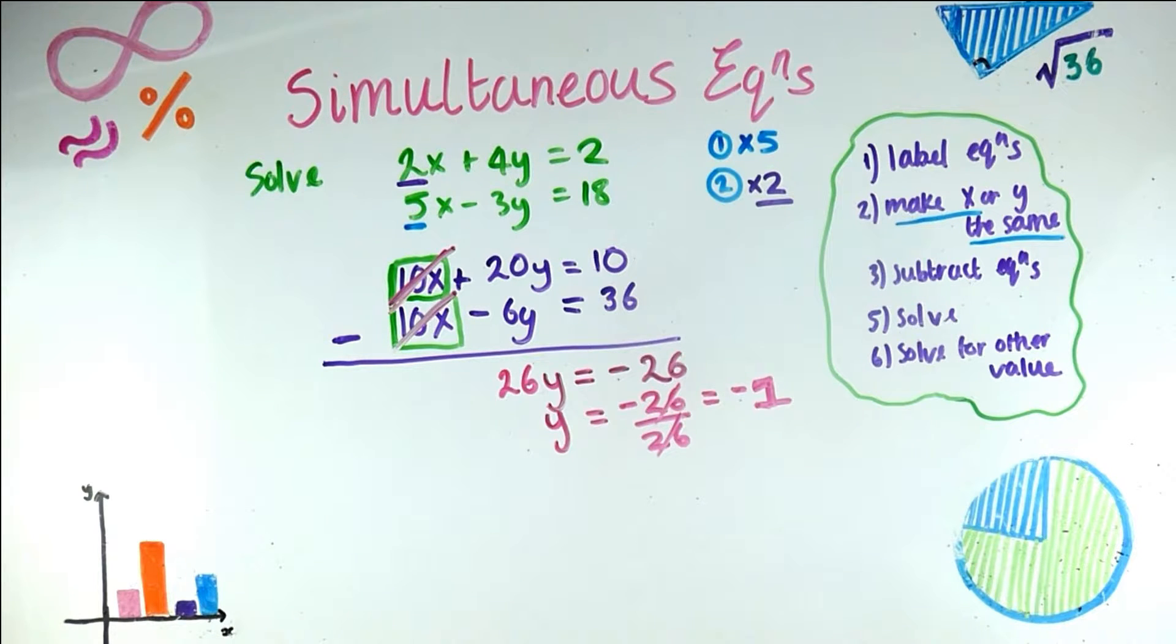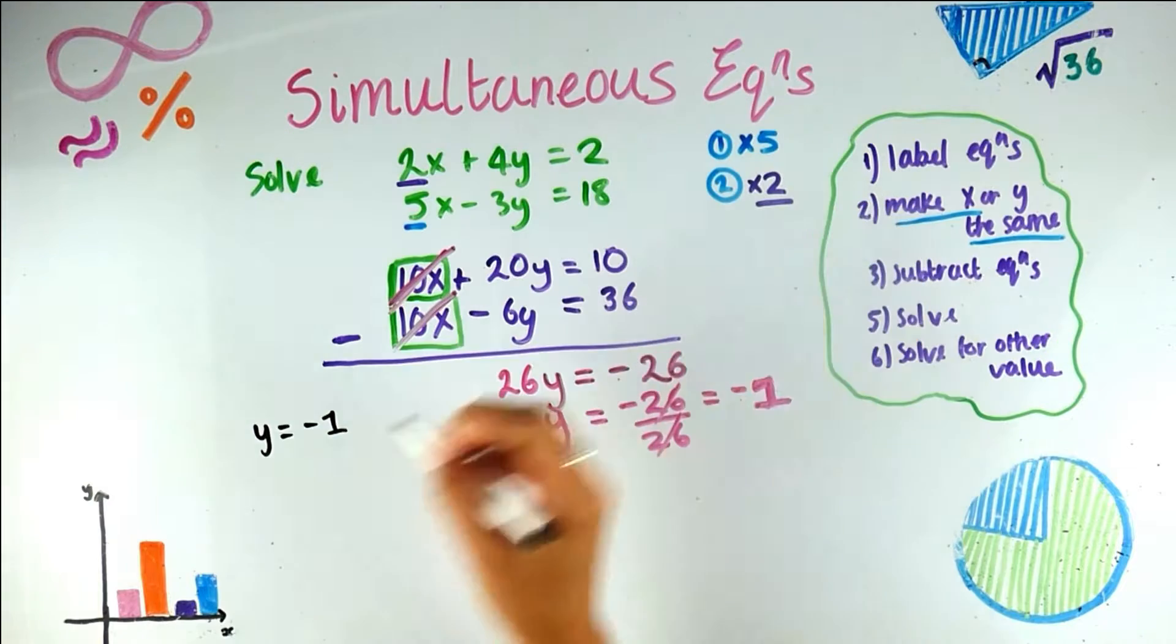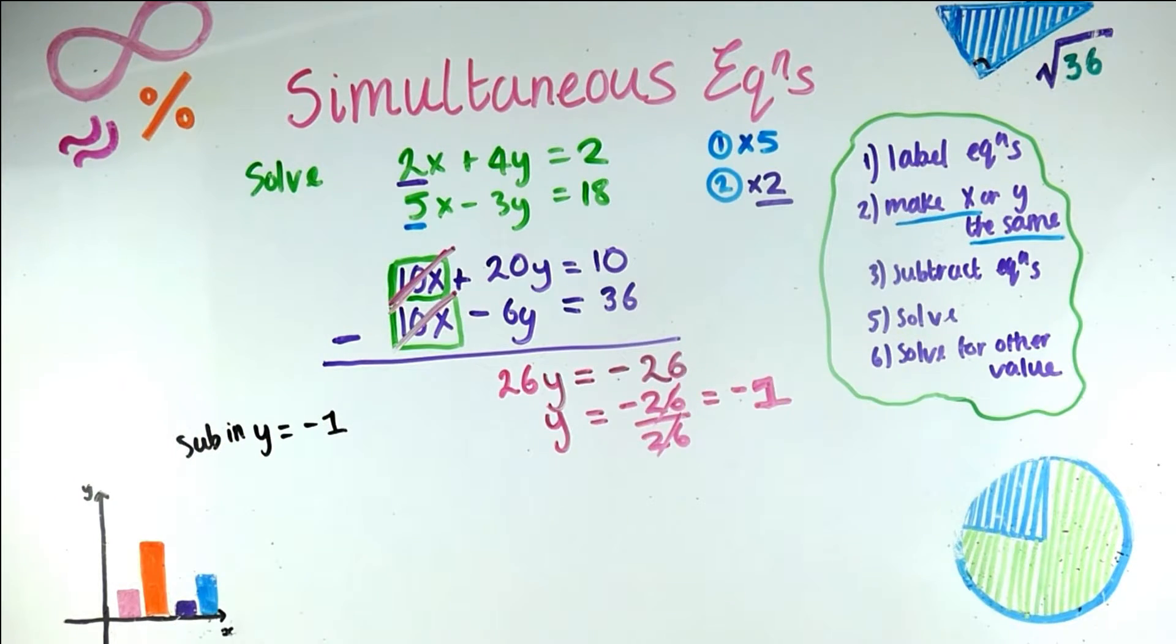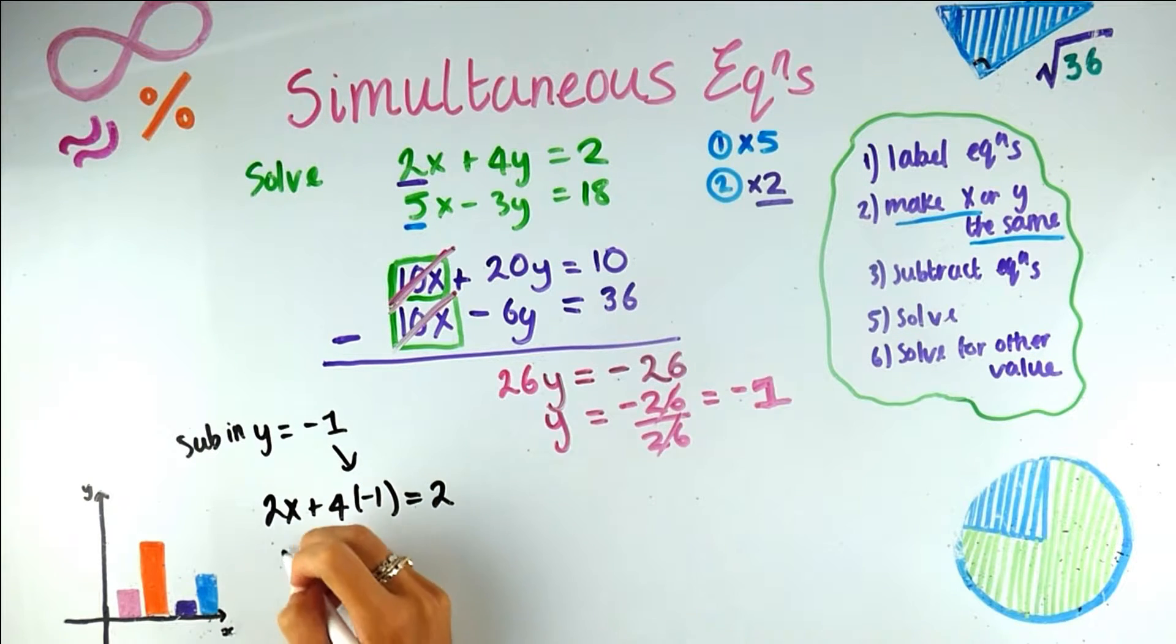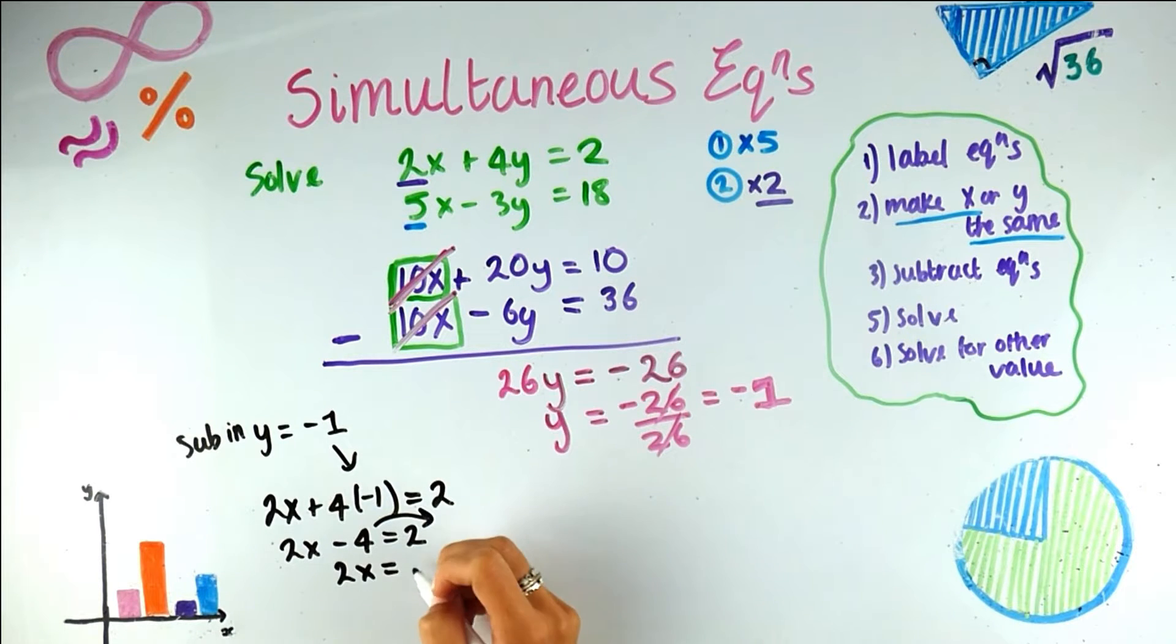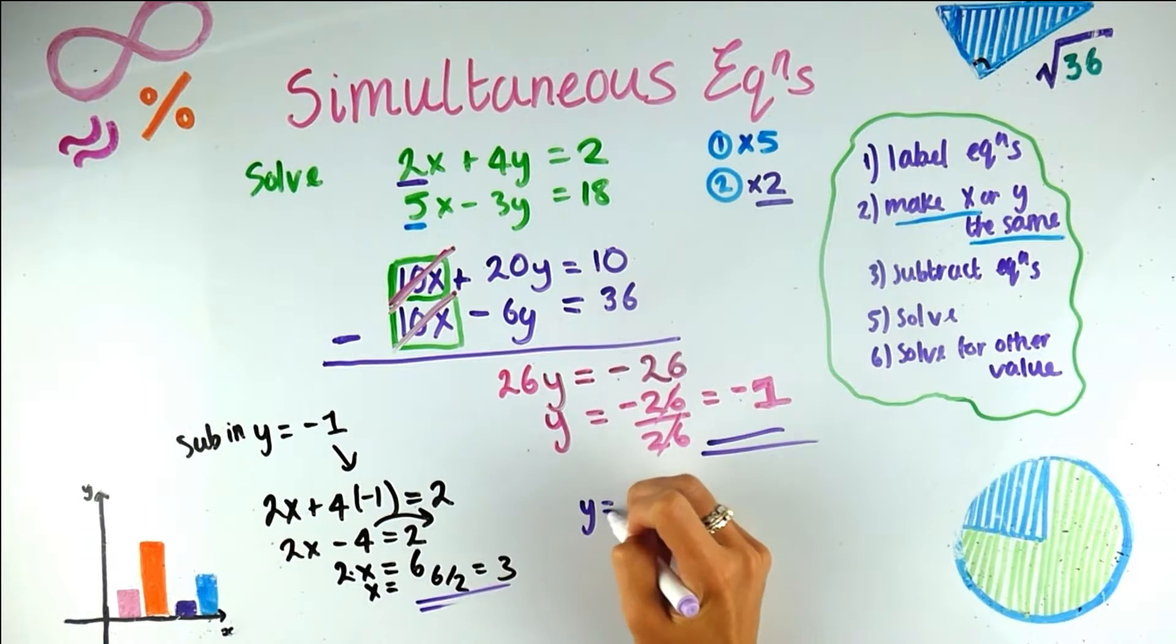Step six, solve for the other value. Aha, step six, very important, very easily forgotten. So now we know what y is, but we've also got the x value. So we have to substitute this y equals minus 1 back into either equation 1 or 2. You can literally pick which one. I'm going to do it in equation 2. So I have 2x plus 4 times minus 1, substituting the y value. So that's 2x minus 4 equals 2. So that is 2x equals, if we take the minus 4 there, it becomes plus 4. 2 plus 4 is 6. So that is x equals, and then we take the 2 over the other side. It's multiplying this side, so it's divided on that side. So it's 6 divided by 2, which is 3. Therefore, our final answer is y equals minus 1, and x equals 3.